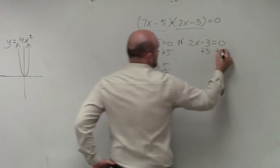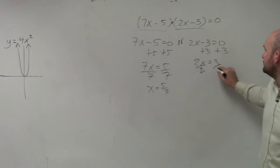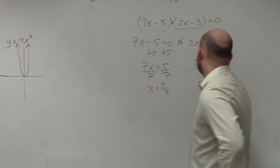Here, I'll add 3, add 3. 2x equals a positive 3. Divide by 2, divide by 2. x equals 3 halves.